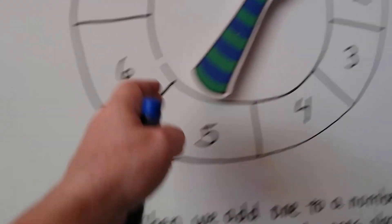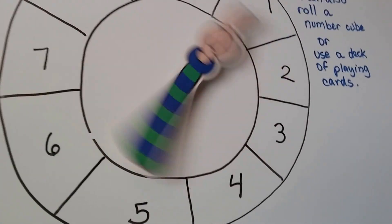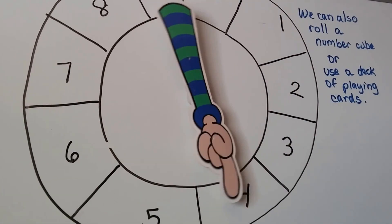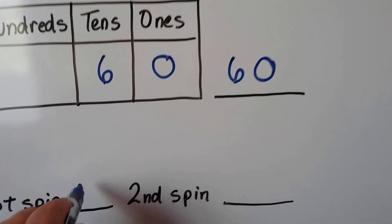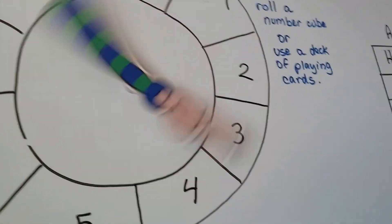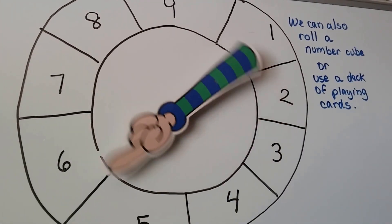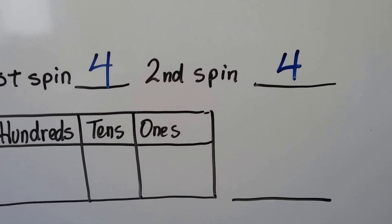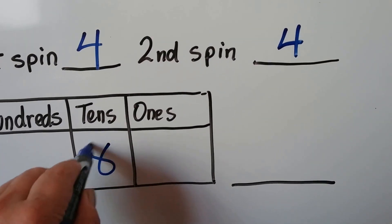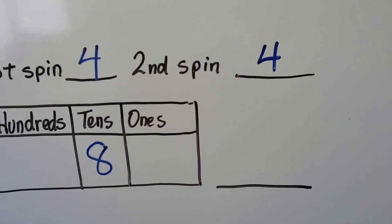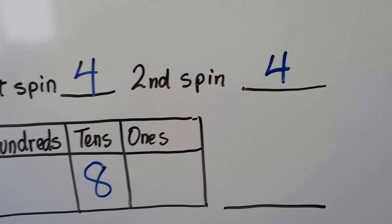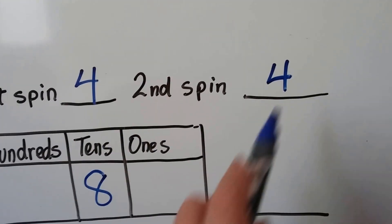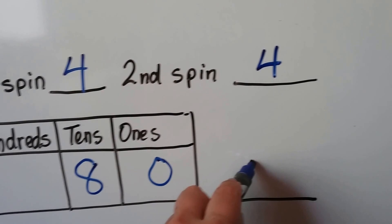Let's try again. We have four tens. Four tens and four tens make eight tens, so that would be eighty.